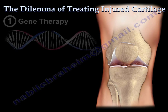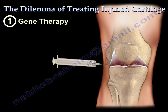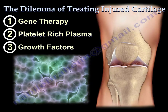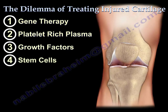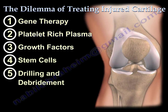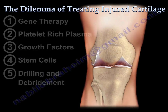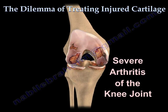Other methods such as gene therapy, platelet-rich plasma, growth factors, stem cells, and drilling and debridement of cartilage may help with injured cartilage. Occasionally, the cartilage is replaced, regrown, and implanted. When the cartilage is damaged and arthritis is severe, the choice is often simple as the patient will need a total knee replacement.